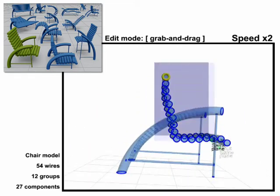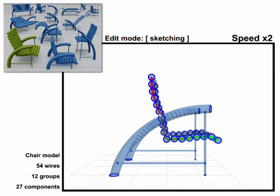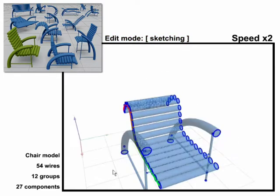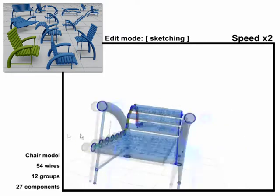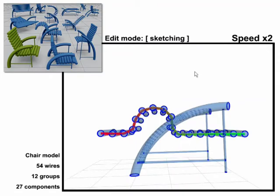We also support a sketch-based interface where the user can draw guiding strokes to affect a significant portion of the model at once. The strokes influence the spatial arrangement of a set of wires, and then the edit operation is propagated to the rest of the model.